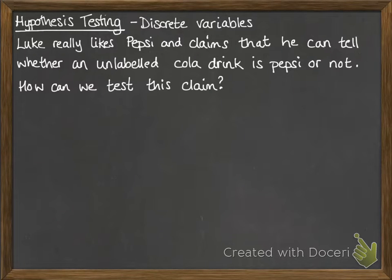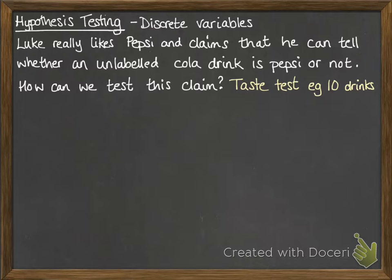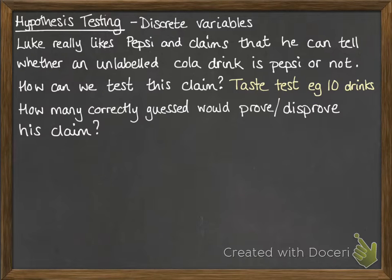You might set up an experiment and get him to taste-test 10 drinks — we'll use this example with a sample of 10. Get him to drink the 10 drinks, state whether it was Pepsi or not, and count how many times he got that right. So how many correctly guessed attempts would actually prove or disprove his claim? How many out of those 10 would you count as proof that he could do it or not?